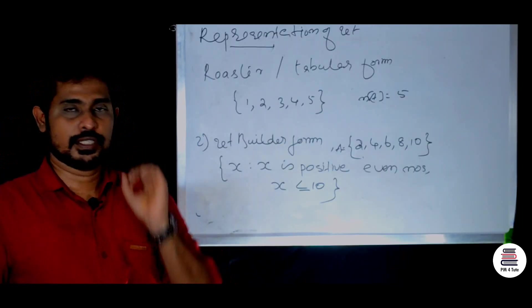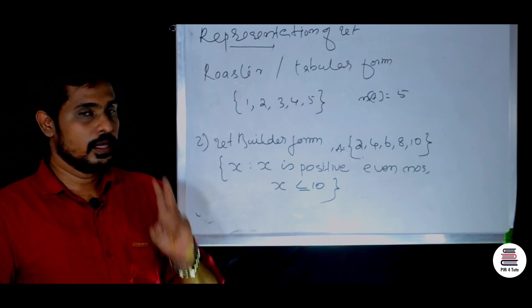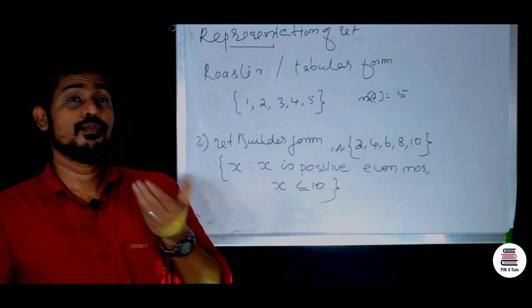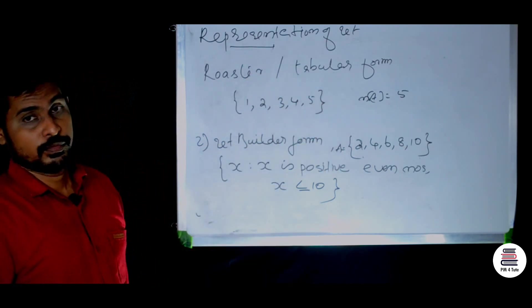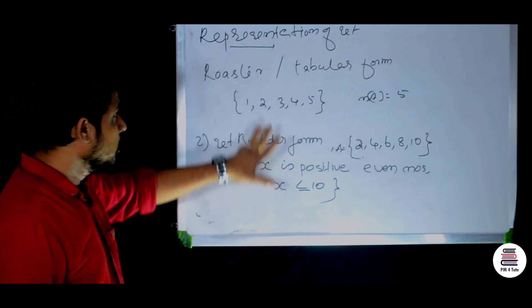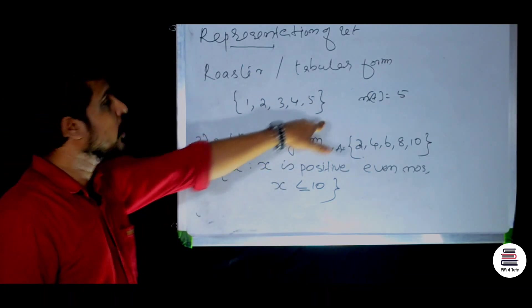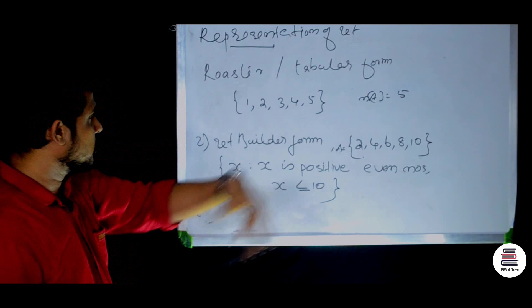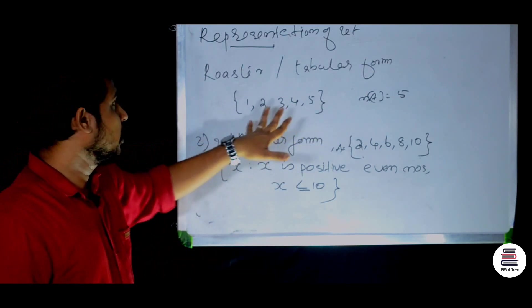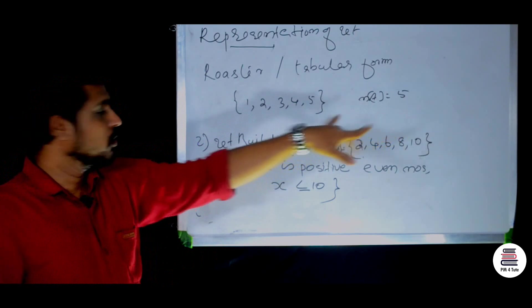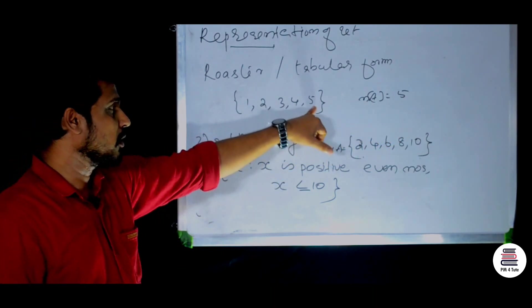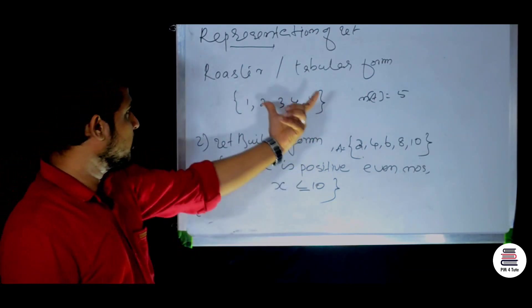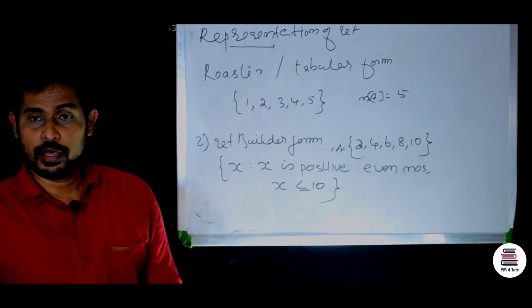Representation of sets — a set can be represented in two forms, namely: the first one is roster or tabular form.